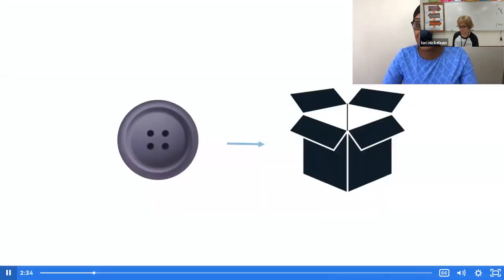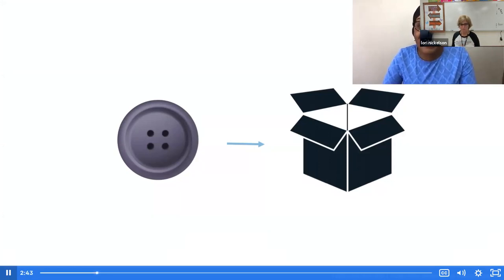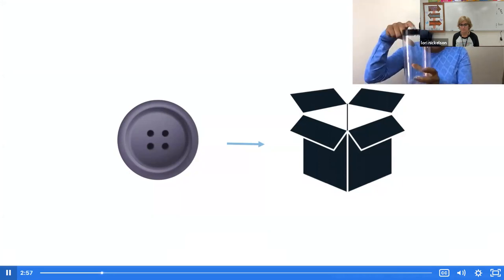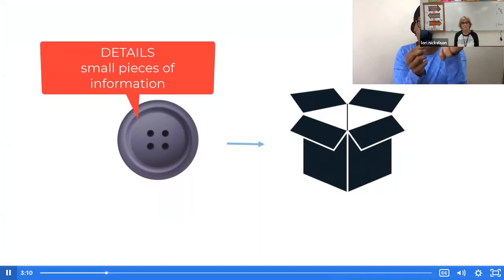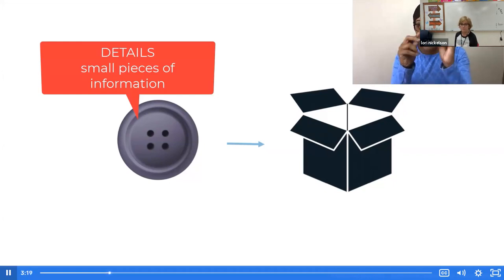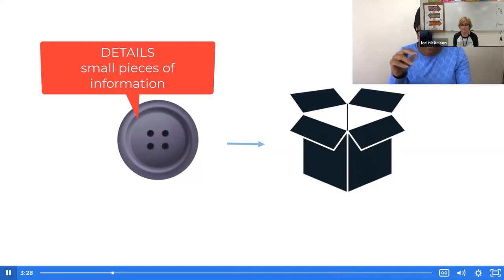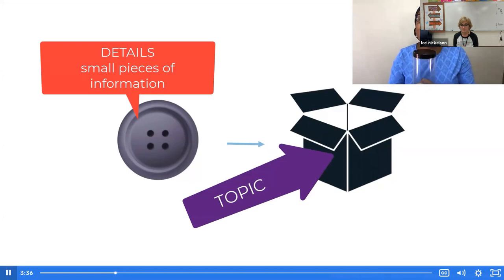We are going to do a routine called boxes and buttons, and this routine helps us organize our thoughts. I am at home, so I don't have buttons and a box available, but I'm going to show you what I am going to use. I'm going to use this jar — this will represent my box — and these pennies or crumpled up pieces of paper will represent my buttons. Buttons help readers pay attention to the details so we can understand what's happening in the text. These buttons are like small bits of information in each detail. And this box, or jar, is the topic that holds all of the different details together.